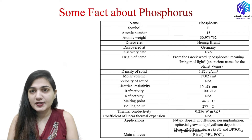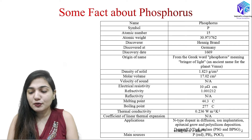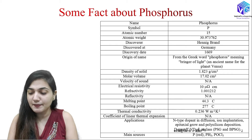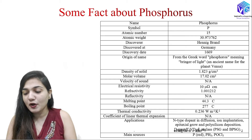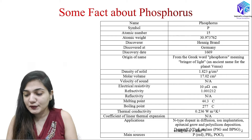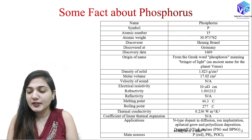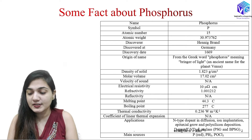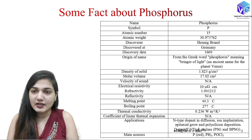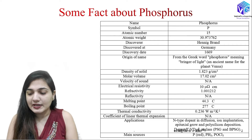Phosphorus, having atomic number 15, is used in various applications such as manufacturing of n-type dopant in diffusion, in ion implantation, epitaxial growth, and polysilicon deposition. It is also used in chemical vapor deposition and in making doped glasses like phosphosilicate glass and borophosphosilicate glass. Various sources of phosphorus include red phosphorus, PH3, and POCl3.